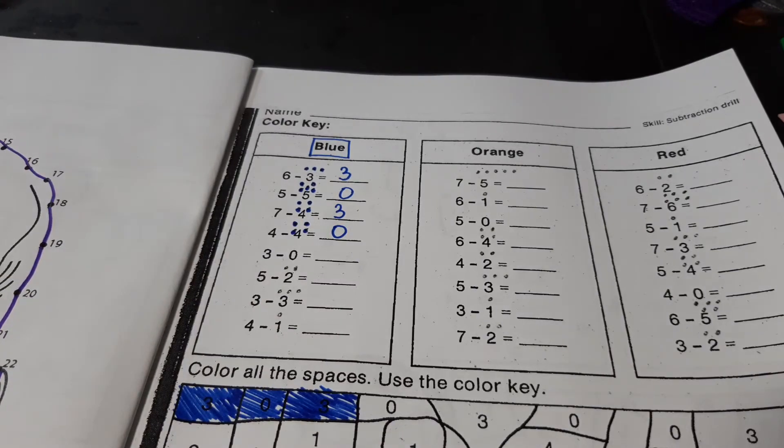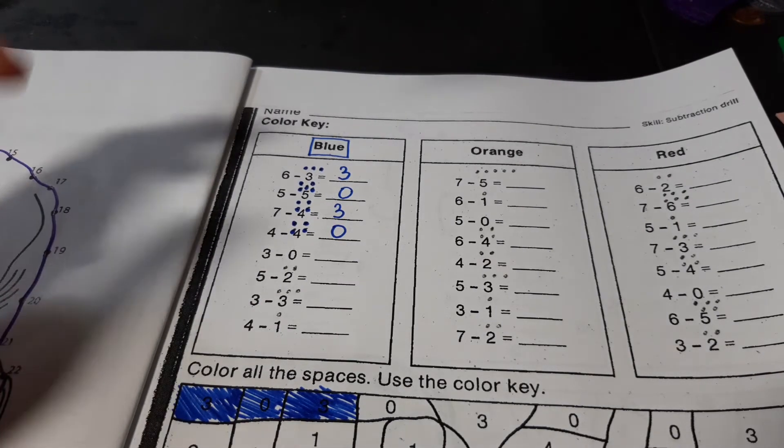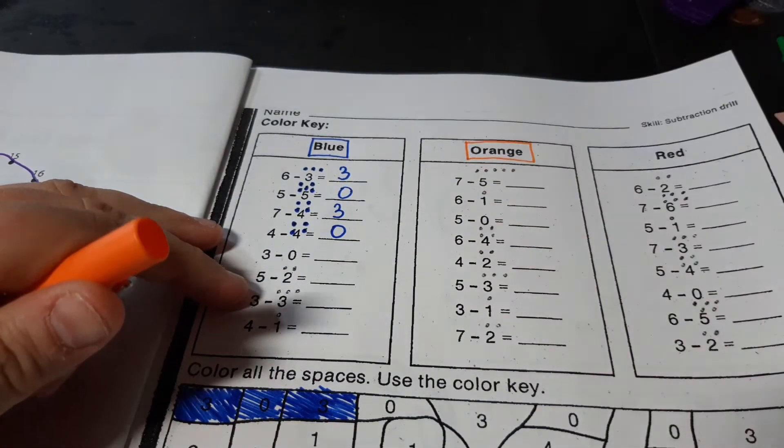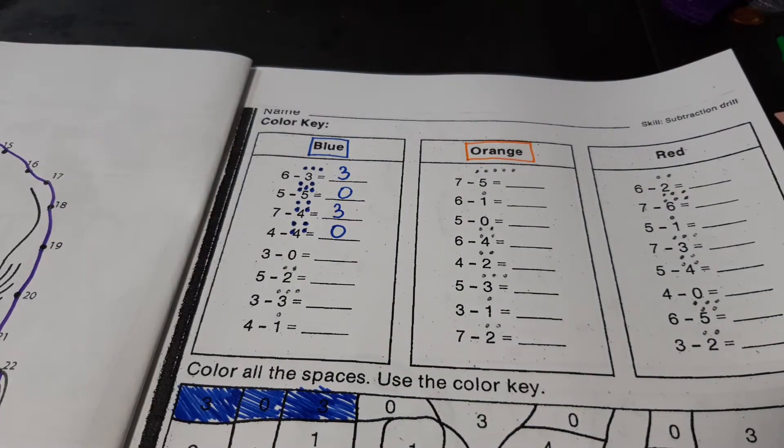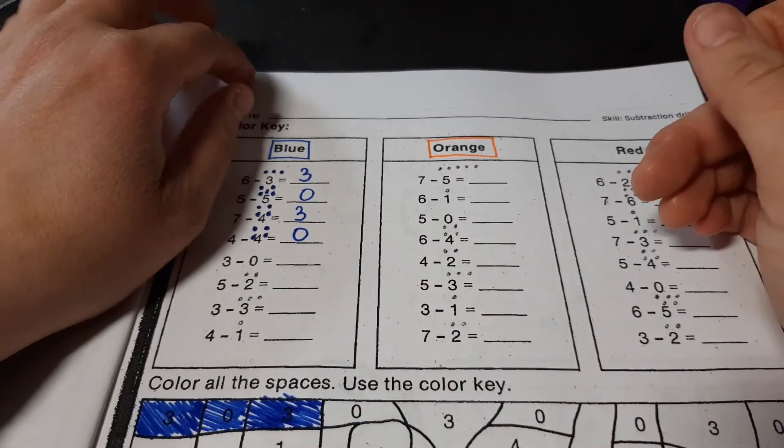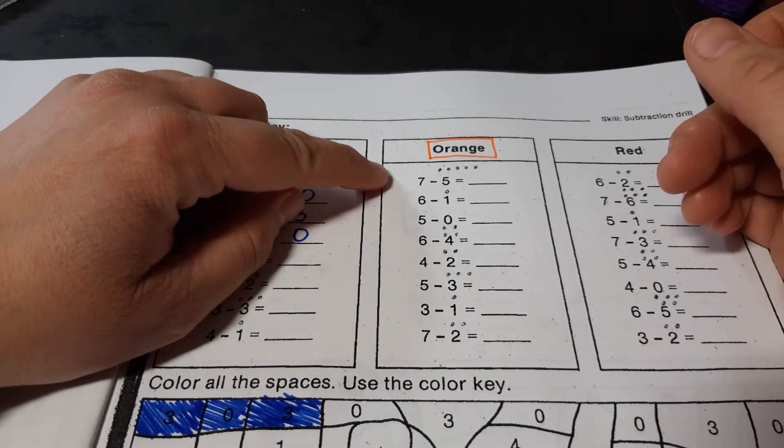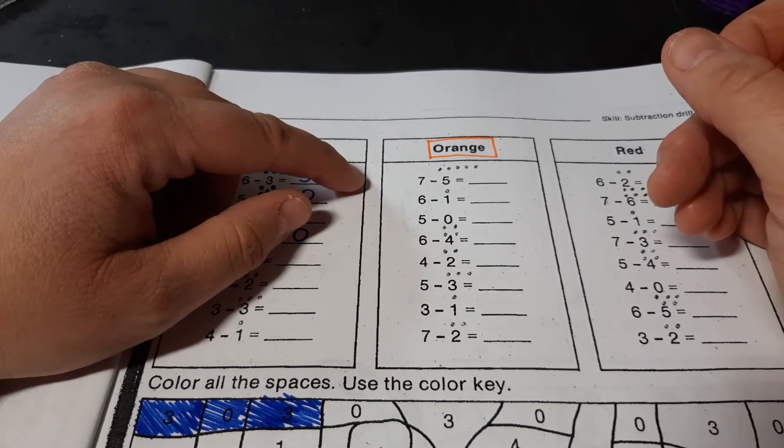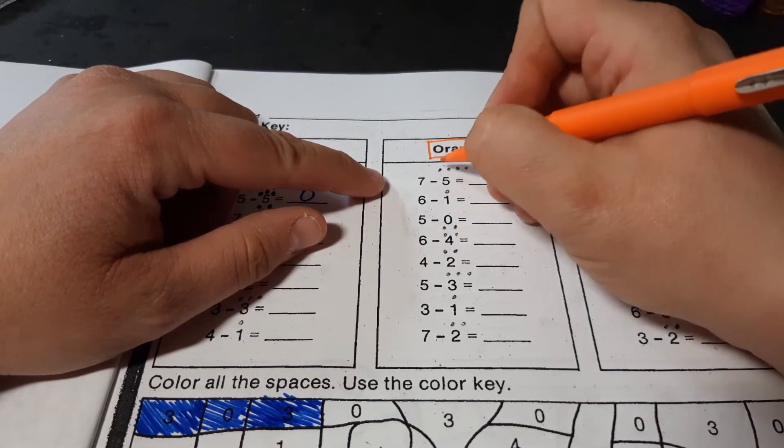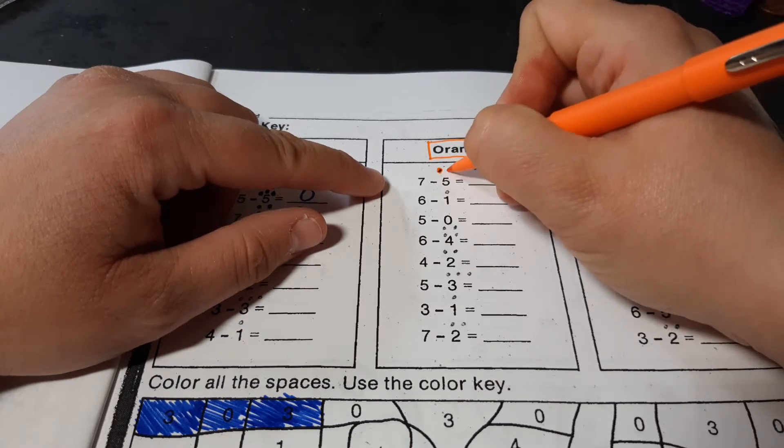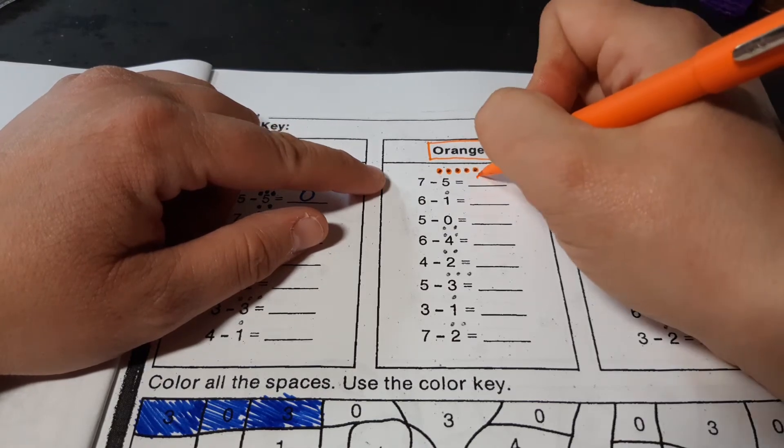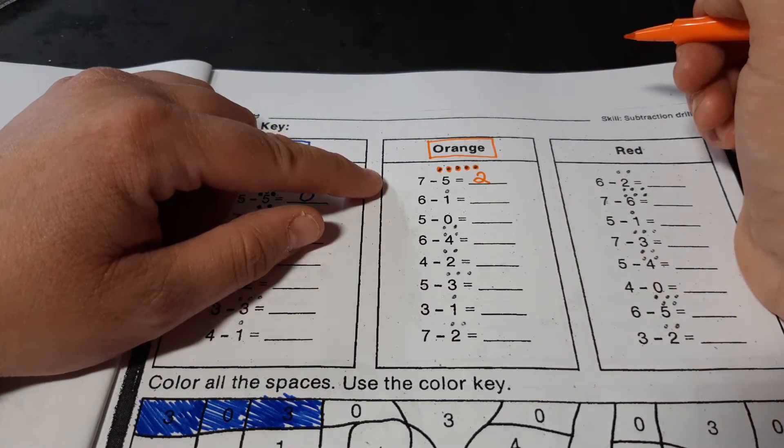This next column you have is going to be orange. Again, we are subtracting. And again, you can use a number line, you can use your fingers, or you can use dots to count backwards to subtract. So, here we have 7 minus 5. 7, 6, 5, 4, 3, 2. 2 is the answer. It goes on the line.